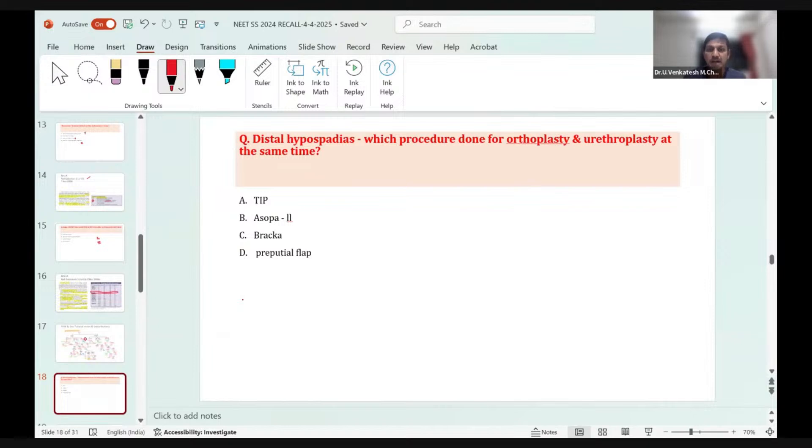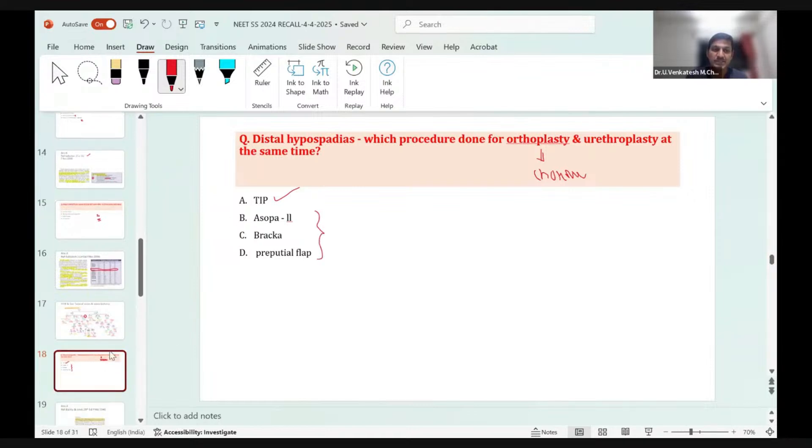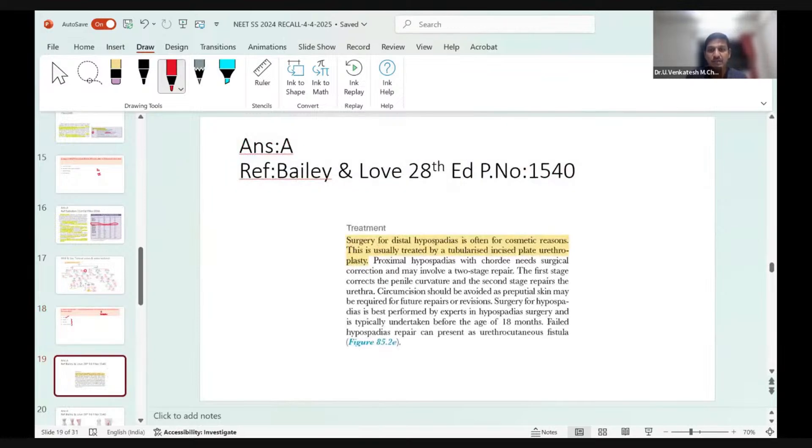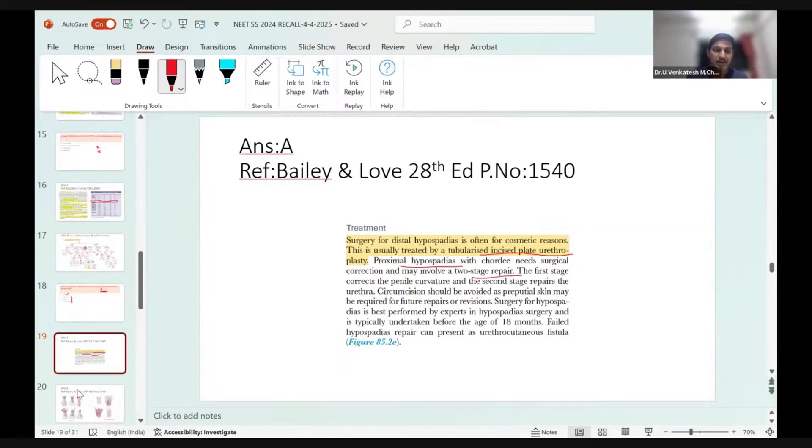Question on hypospadias: In a case of distal hypospadias, which procedure is done for orthoplasty and urethroplasty at the same time? Orthoplasty means correction of chordee, straightening the penis. For any distal hypospadias, the only treatment option is TIP - tubularized incised urethral plate. That's the best treatment available. All the others like Bracka and preputial island flap are usually done for proximal hypospadias. There's no mention in textbooks, but you can get the answer from Sabiston: surgery for distal hypospadias is often for cosmetic reasons and usually uses tubularized incised plate urethroplasty, the TIP procedure.